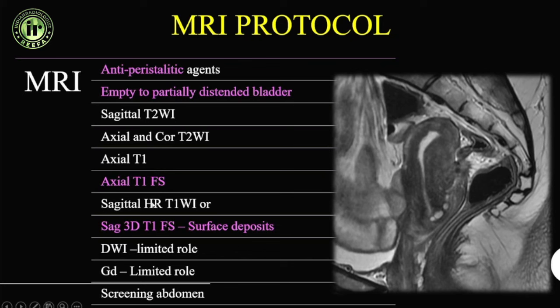A high-resolution sagittal 3D T1 fat sat sequence is another important addition — we call it LAVA on GE. This is a T1 fat-suppressed sequence in 3D taken in the sagittal plane, and it is specifically for identifying surface deposits.